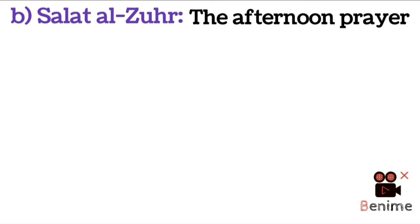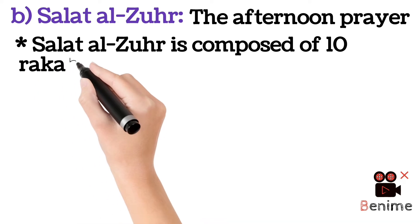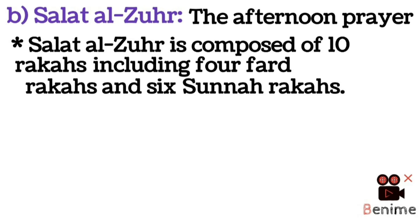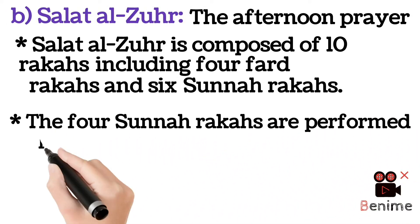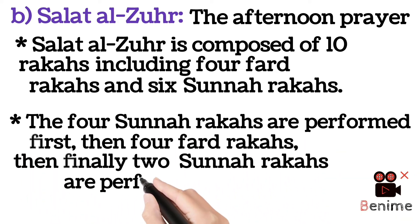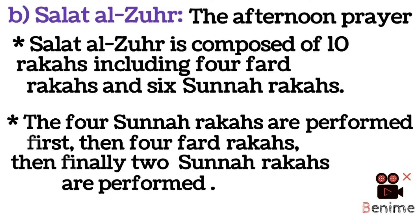Salat al-Dhuhr is composed of ten rakahs, including four Fard rakahs and six Sunnah rakahs. The four Sunnah rakahs are performed first, then the four Fard rakahs, and then finally two Sunnah rakahs are performed.